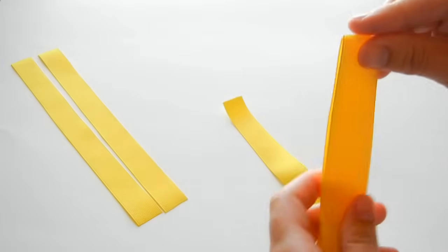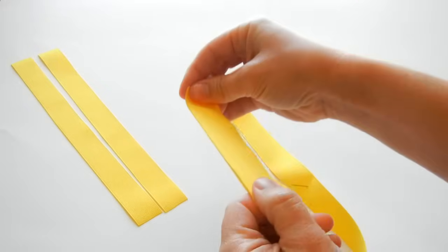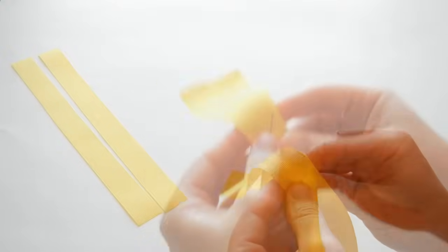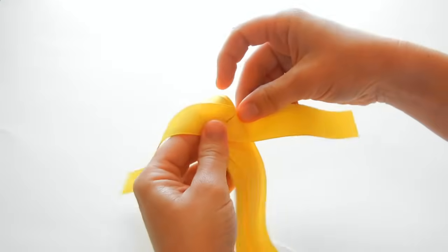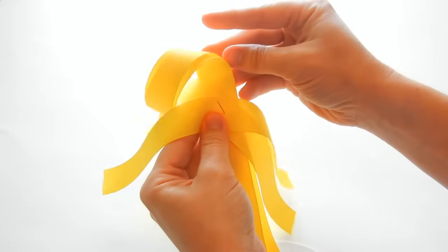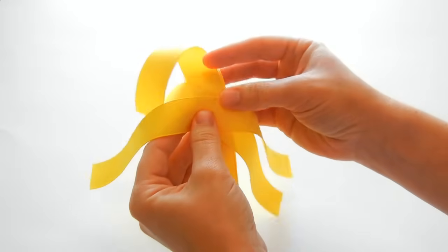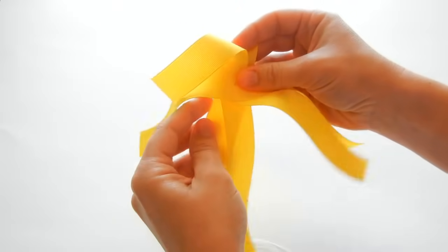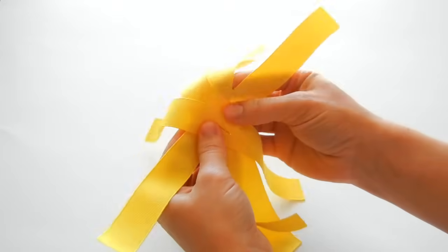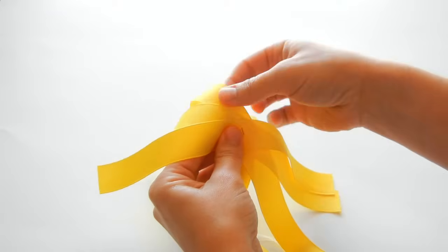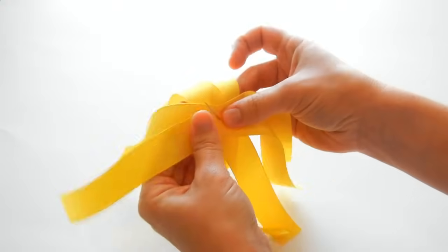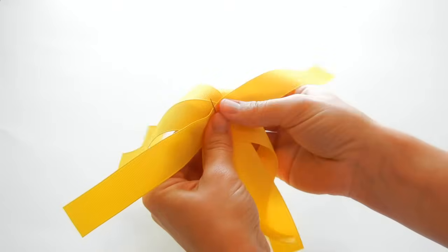Now once all our pieces are on our needle, we're going to start forming them into the shape that we want. Do that by making some X's, making an X with those two and these two. If you need to, you can use an alligator clip to kind of hold everything together.